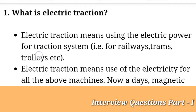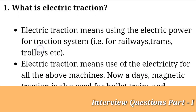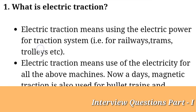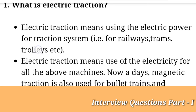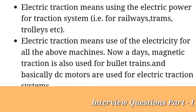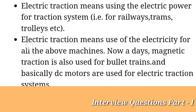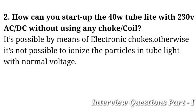Electric traction means use of electricity for all the above. Nowadays magnetic traction is also used for bullet trains. For electric traction systems, DC motors are used — specifically DC series motors, because a DC series motor does not start without a load.